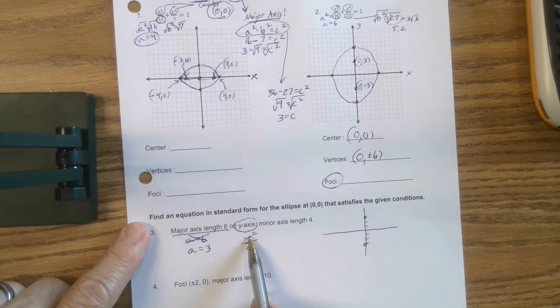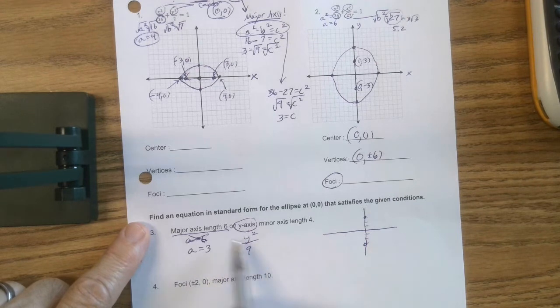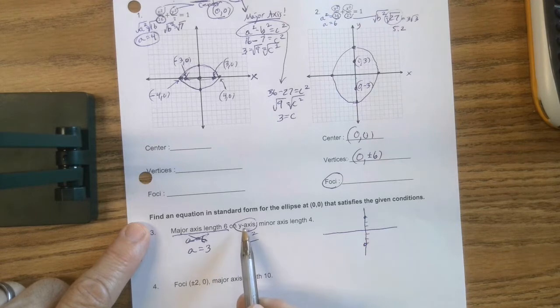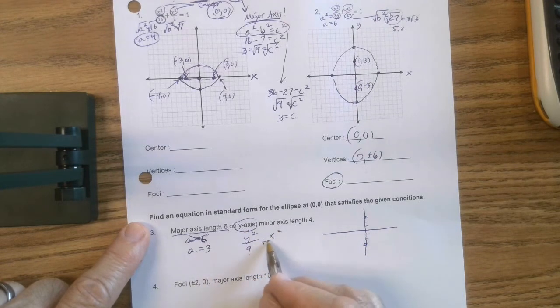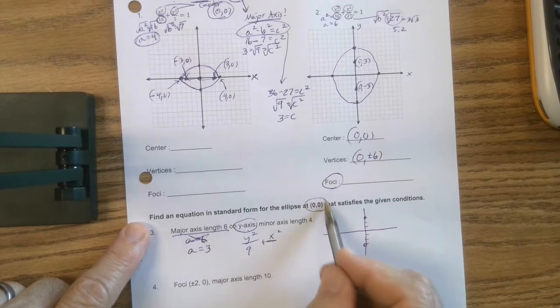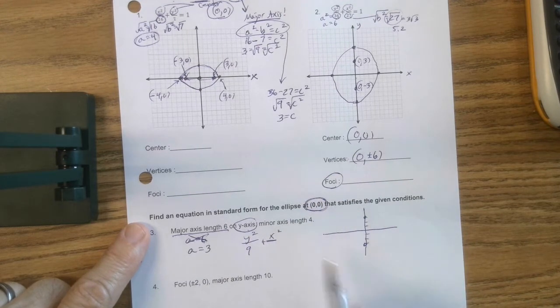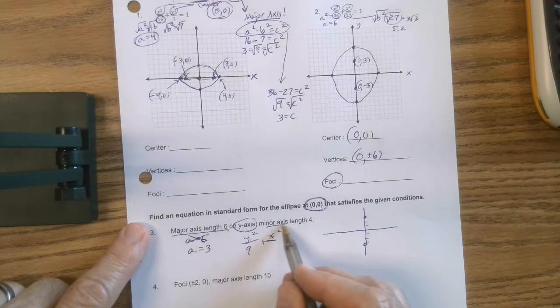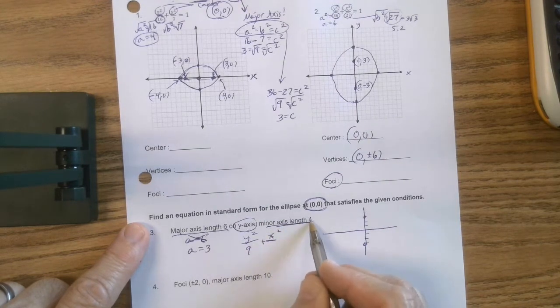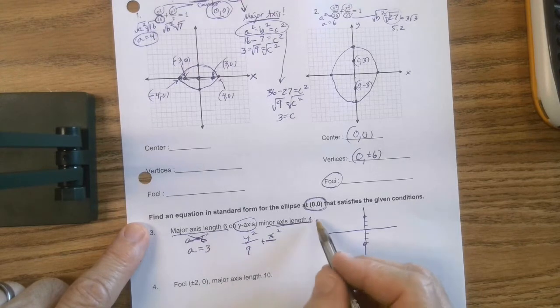Because the major axis is going to represent a, and it's got to be underneath the y. Plus x squared. Now I know that the center is 0, 0. So therefore it's not going to be shifting here. So then it says the minor axis is length 6. Where did that come from? 4.